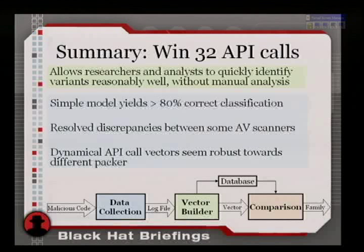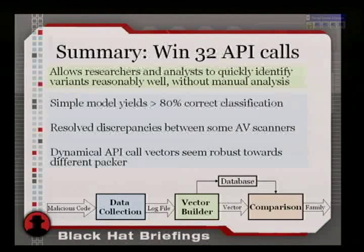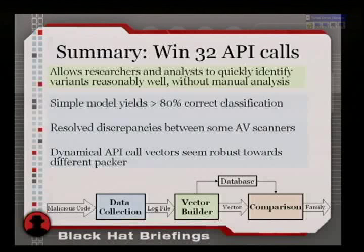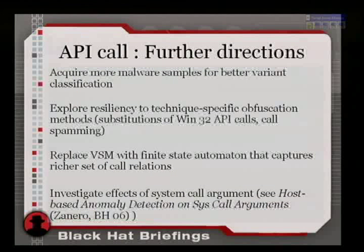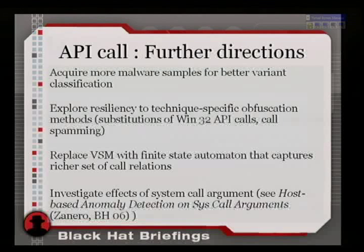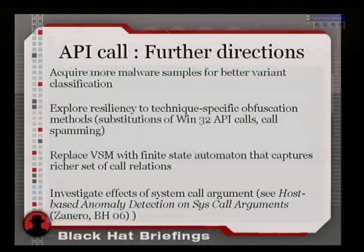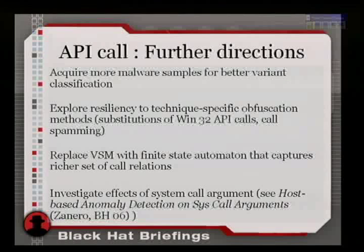The summary: this simple sequence of API calls was robust toward packers and achieved 80% accuracy without anything more complicated than a simple database cross-compared with a cosine similarity model. Future work: get more malware samples, run technique-specific exploits to attack the classification scheme, and build more intelligence into the sequence modeling using a finite state automaton.